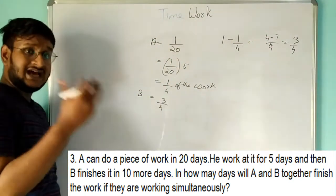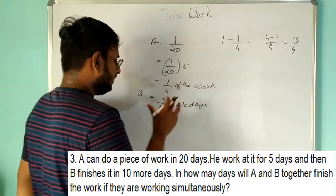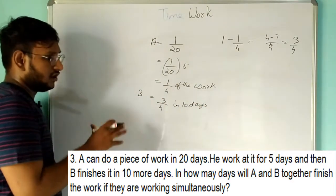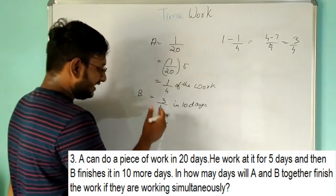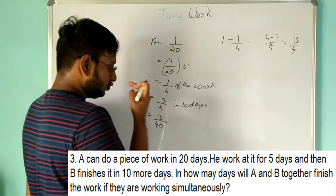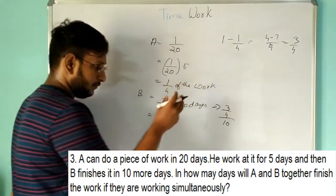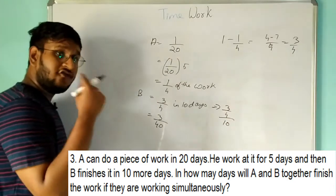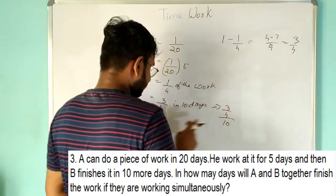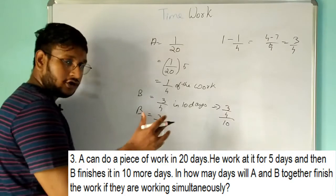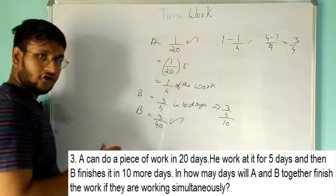B completes 3/4 of the work in 10 days, so in one day B completes (3/4) ÷ 10 = 3/40 of the work. Now A does 1/20 per day and B does 3/40 per day.